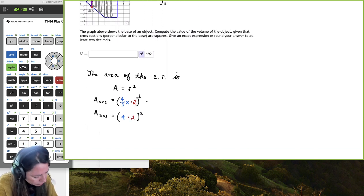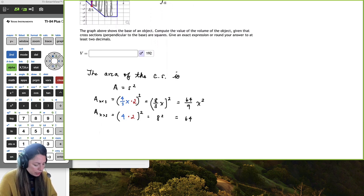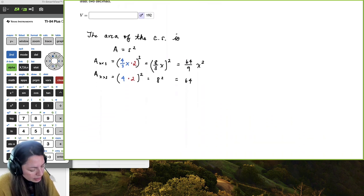So if we just simplify this a little bit, we'll get 8 thirds x and then squared. And then here we'll get 4 times 2 is 8 squared. And then to simplify it a little bit more, we'll get 64 ninths x squared, and then this one will just be 64. So we know we're going to split it right at that 3. That would be like step 1.